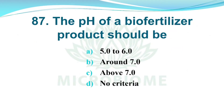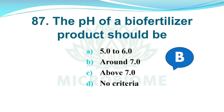And next, the pH of a biofertilizer product should be. Options: A) 5 to 6, B) Around 7, C) Above 7, D) No criteria. The right answer is Option B, Around 7.